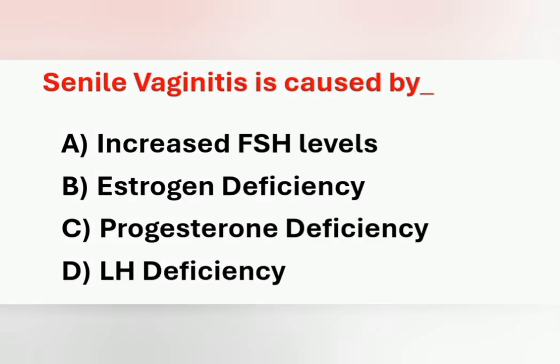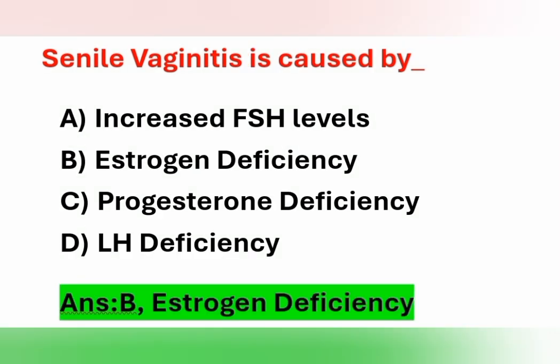Next question: senile vaginitis is caused by? Options: A) Increased FSH level, B) Estrogen deficiency, C) Progesterone deficiency, D) LH deficiency. Senile vaginitis is caused due to deficiency of estrogen. Option B is the correct answer.